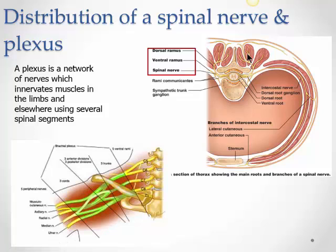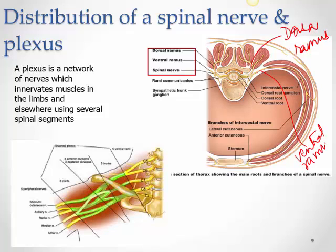The other branch is the ventral ramus, which comes toward the front and is much longer than the dorsal ramus. It supplies the intercostal muscles, the lateral aspect of the body, and the skin on the anterior aspect. Both rami are mixed, just like the spinal nerve itself. The roots, on the other hand, either carry afferent fibers or efferent fibers — not both.